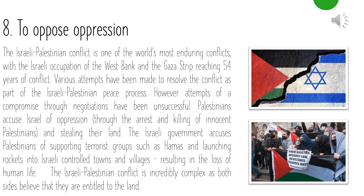Eight: to oppose oppression. The Israeli-Palestinian conflict is one of the world's most enduring conflicts, with Israeli occupation of the West Bank and Gaza Strip reaching 45 years. Various attempts have been made to resolve the conflict, but negotiations have been unsuccessful. Palestinians accuse Israel of oppression through arrest and killing of innocent Palestinians and the stealing of their land. The Israeli government accuses Palestinians of supporting terrorist groups such as Hamas and launching rockets into Israeli towns. The conflict is incredibly complex as both sides believe they are entitled to the land.